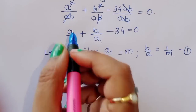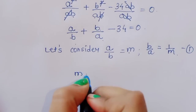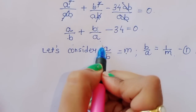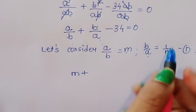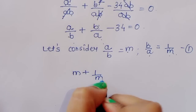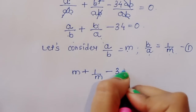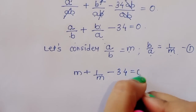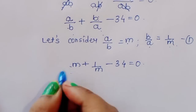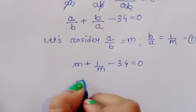Since a upon b is equal to m, we can write this equation as m plus 1 upon m minus 34 is equal to 0.